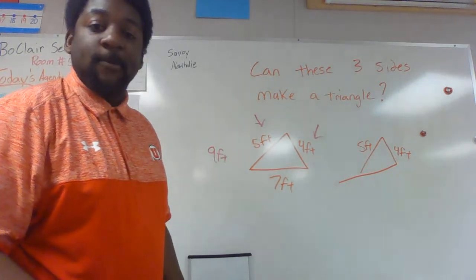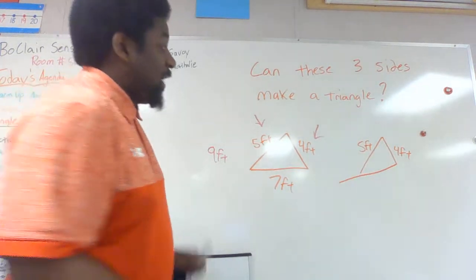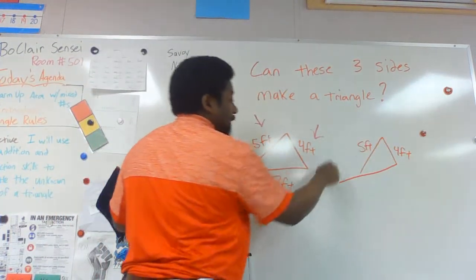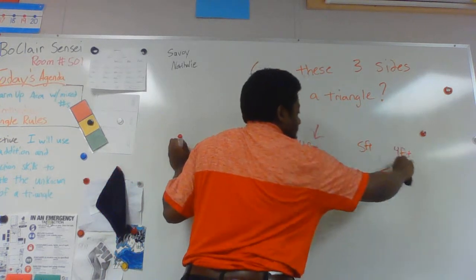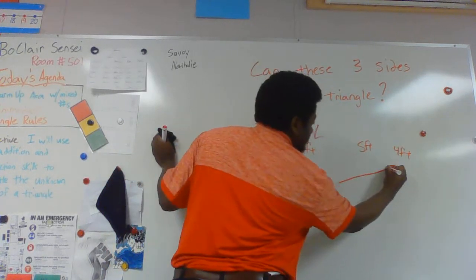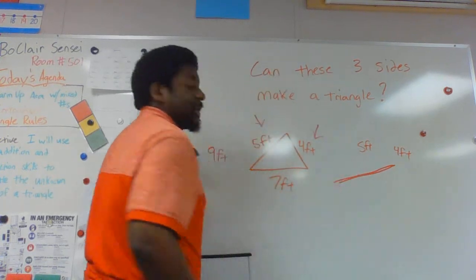Even if I was to angle these all the way out this way, if these are exactly 9 feet, these two, the 4 foot and the 5 foot, would line up straight on top of it and that would not make a triangle.